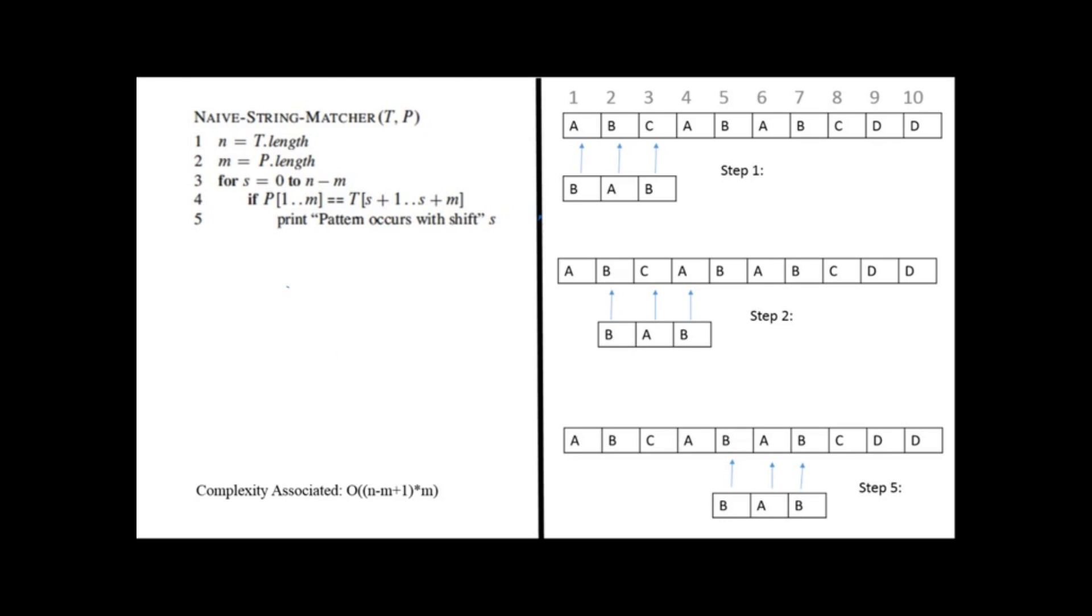We will assign the length of the text to N and the length of the pattern to M. Now as we can see in the example, I will be correlating both the example and the algorithm together. The pattern that we have is P and the text as you can see is of length 10 which is T.